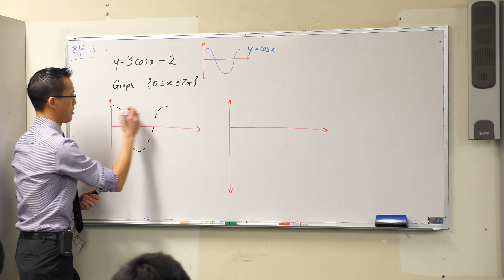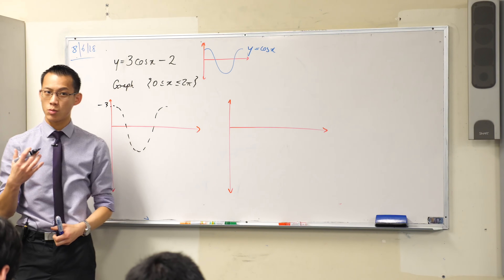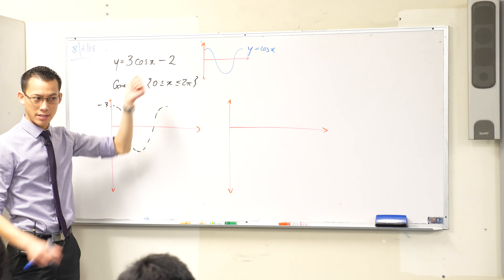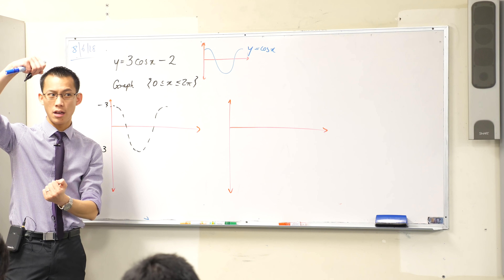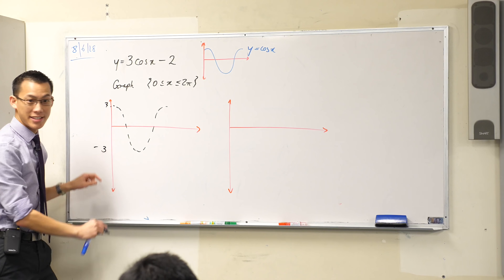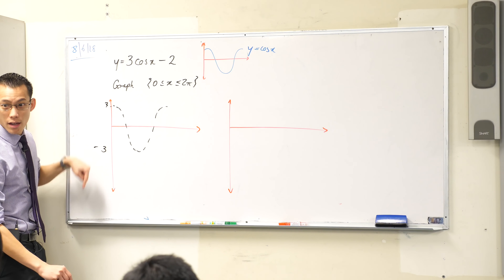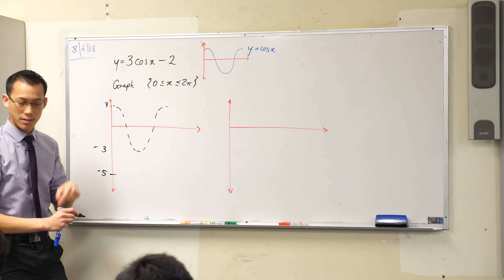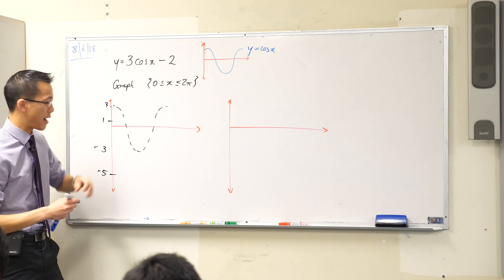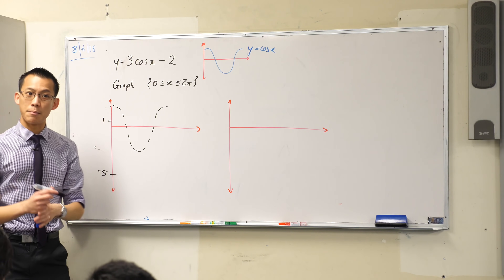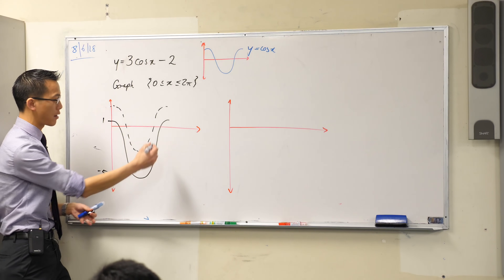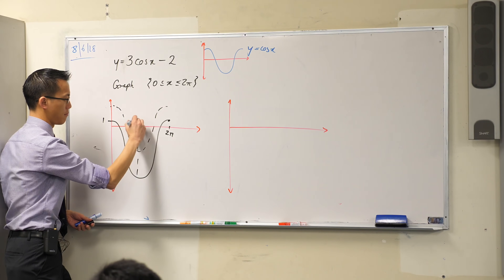But of course there's another change — this negative 2. What does that do? This is not a scaling or stretching — it's a vertical shift downwards 2 units. So instead of going from negative 3 to 3, the negative 3 is now going to be negative 5, and this 3 is also going to go down 2 units to 1. So my new range is from positive 1 down to negative 5.